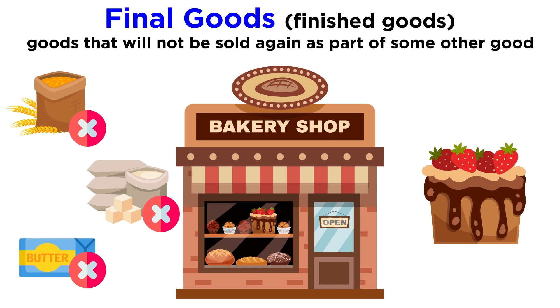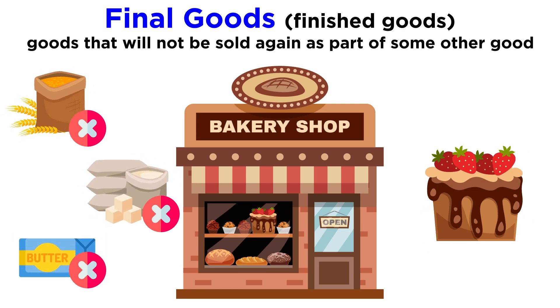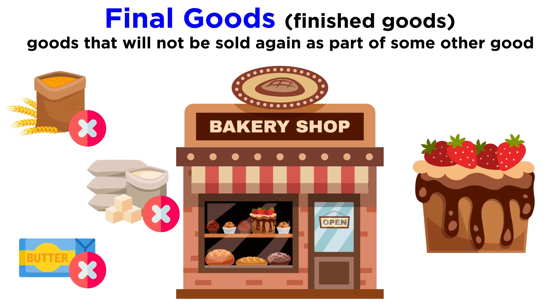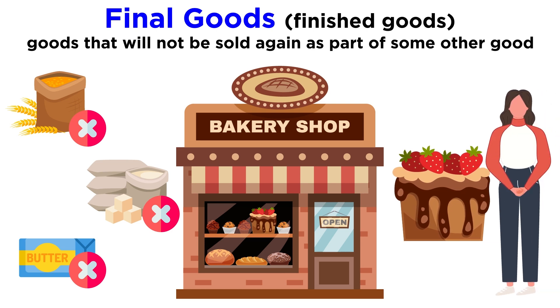The cake the baker made using that flour, sugar, and butter is a final good, since the cake is the final product and its final destination is the consumer. In other words, a customer will buy it and consume it.